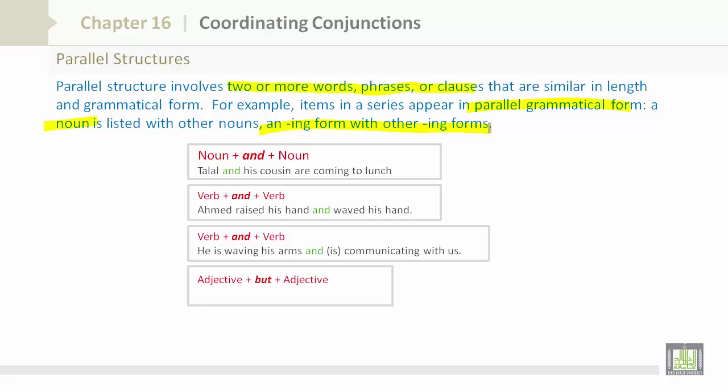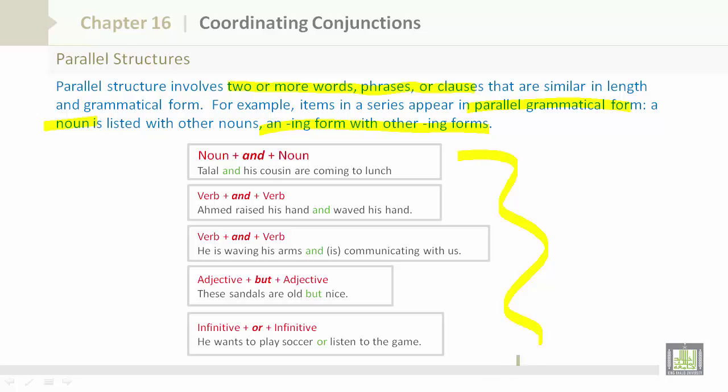Adjective plus but plus adjective: These sandals are old but nice. Infinitive plus or plus infinitive: He wants to play soccer or listen to the game. These are examples of parallel structures. Let us continue.